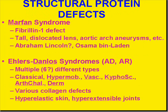Marfan syndrome is a defect of the gene encoding fibrillin-1. If you took a list of all structural proteins in the body, there are probably defects of every one of them in many ways. Marfan syndrome individuals are tall — like Abraham Lincoln or Osama Bin Laden — and frequently have dislocated lenses and aortic arch aneurysms. This is the classical triad, all due to a fibrillin-1 defect.